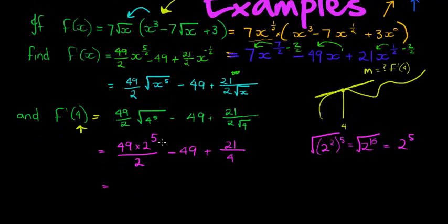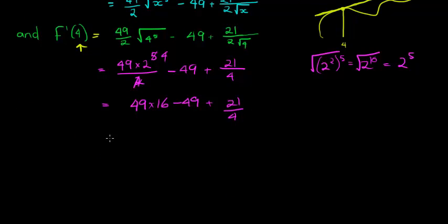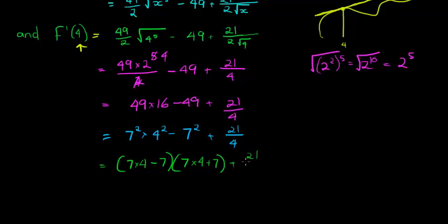Here, that can cancel with one of those to leave me with 2 to the power of 4. That's 16. So I've got 49 times 16 minus 49 plus 21 over 4. I'm having so much fun working with this. So this is 7 squared times 4 squared minus 7 squared plus 21 over 4. Let's see if this is going to work. Here's the difference of two squares. So this is 7 times 4 minus 7 times 7 times 4 plus 7, plus 21 over 4.